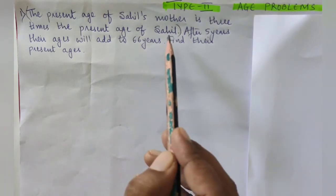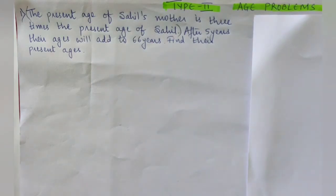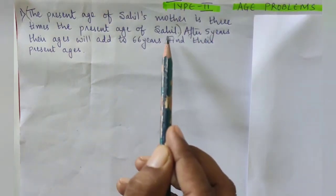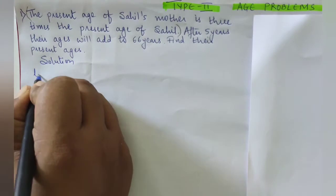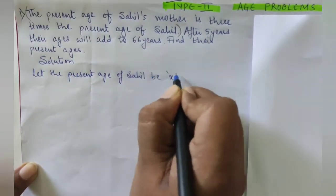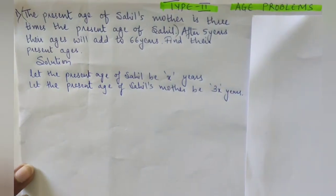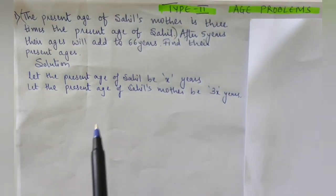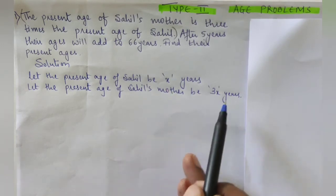Since Sahil's age is unknown, let us take Sahil's age as x years. Then Sahil's mother's age will be three times Sahil's age, so it becomes 3x. So the present age of Sahil is x years and the present age of Sahil's mother is 3x years.